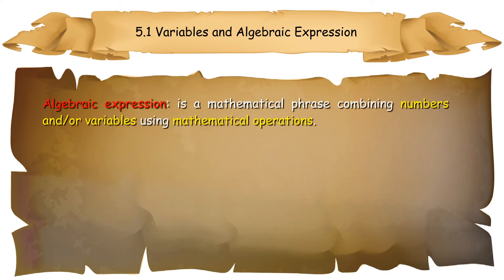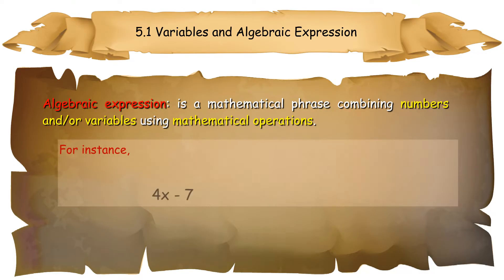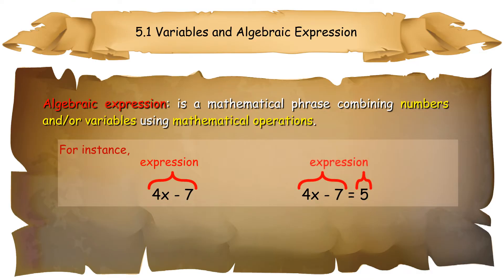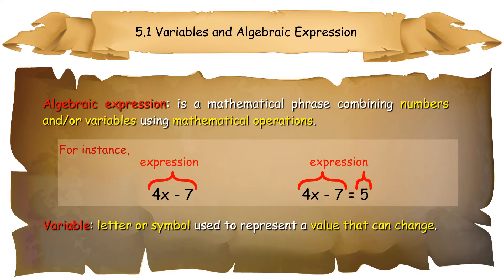An algebraic expression is a mathematical phrase combining numbers and/or variables using mathematical operations. Expressions do not contain equality or inequality signs. Both sides of an equation are expressions. A variable is a letter or symbol used to represent a value that can change.